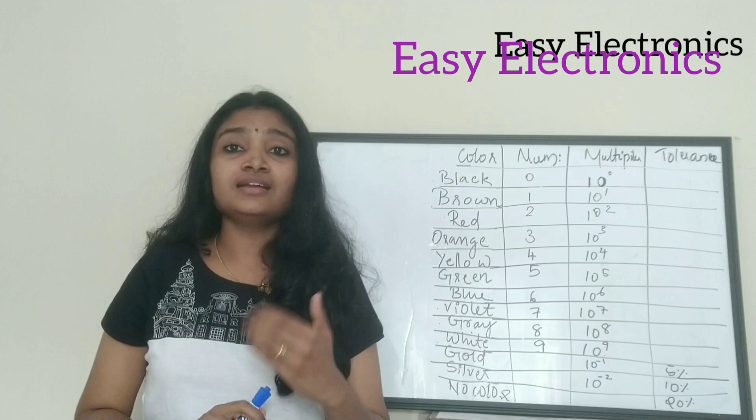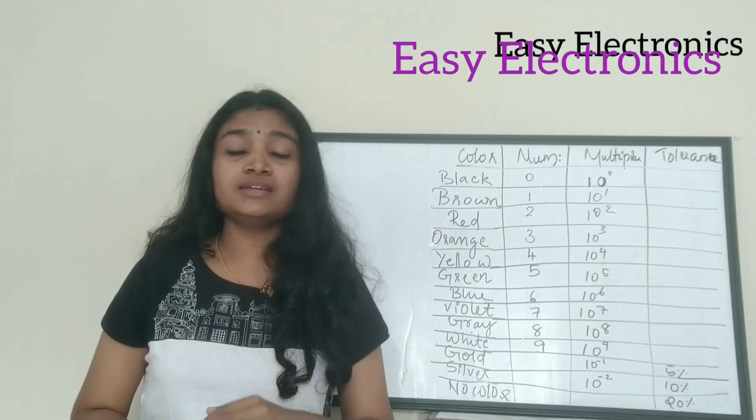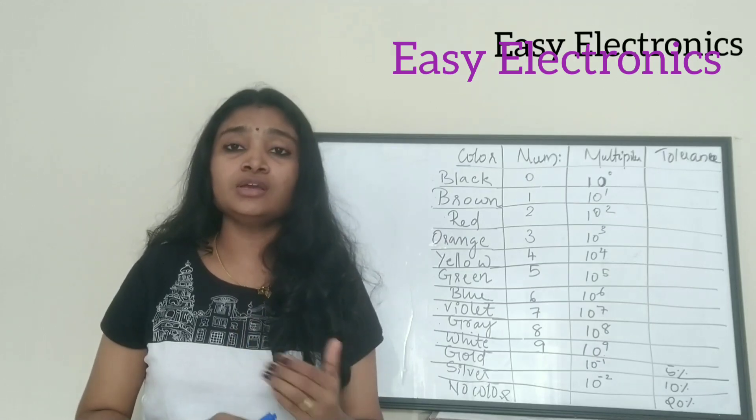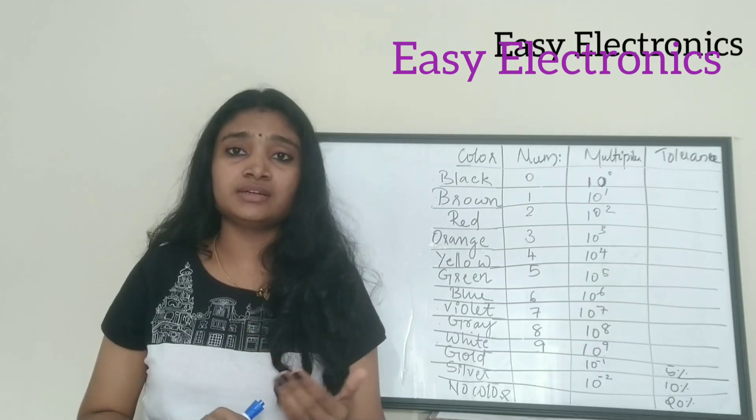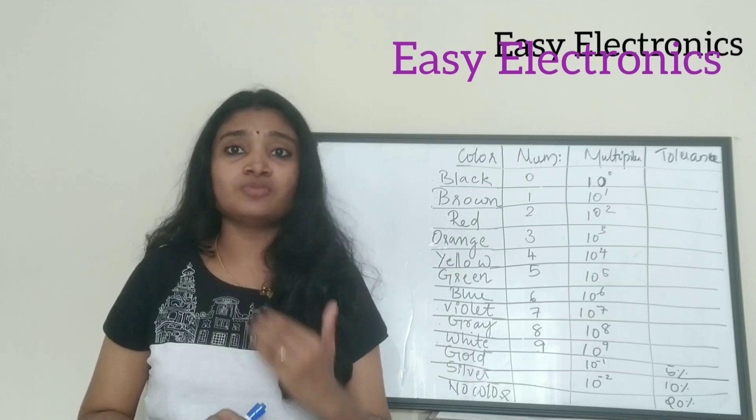Now let's use the mnemonic code for the resistor color coding: BB Roy of Great Britain has a very good wife.